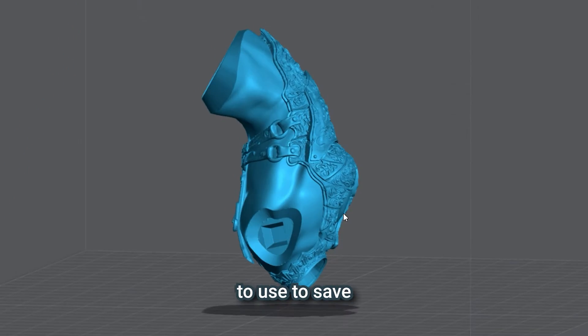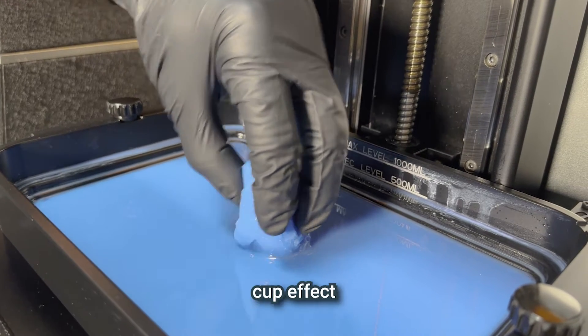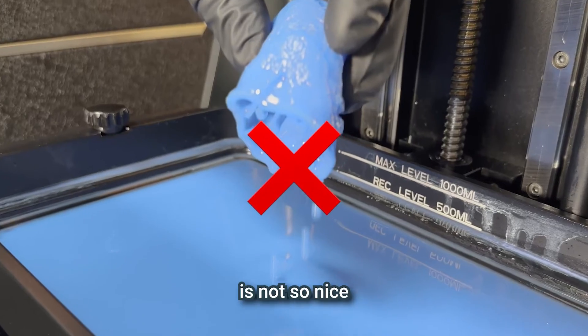Hollowing is such a cool feature to use to save resin and money, but the suction cap effect that comes with it is not so nice.